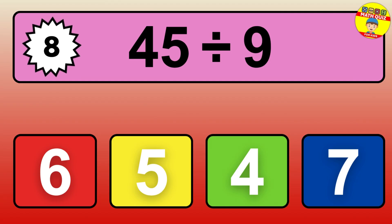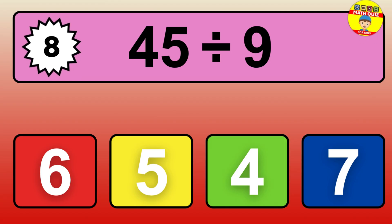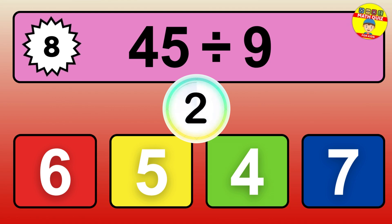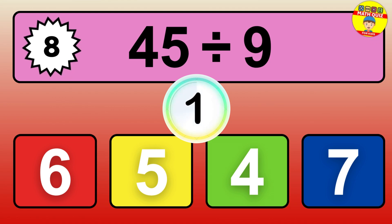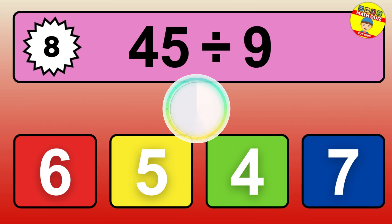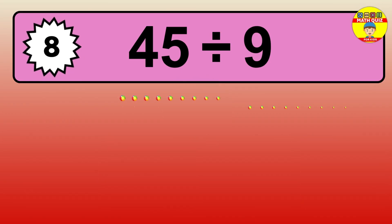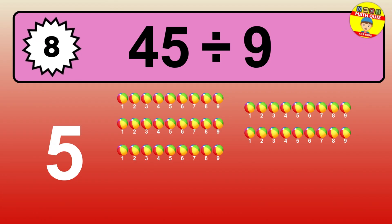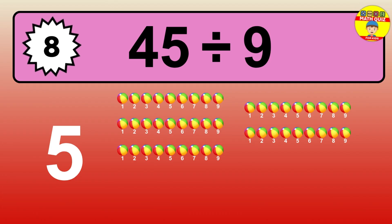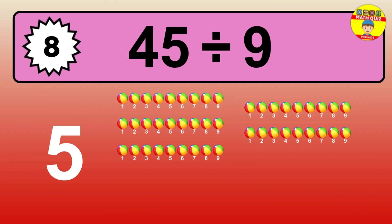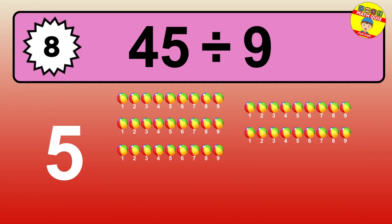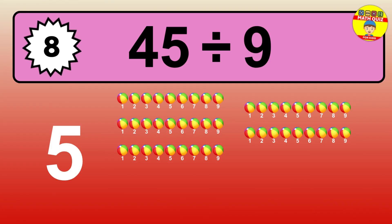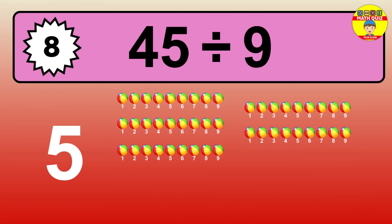35 divided by 7 — time to think. Let's go to the solution. Divide the number 35 by 7. Each group contains 7 units, so dividing 35 by 7 results in 5 equal groups. Thus, the result is 35 divided by 7 equals 5.